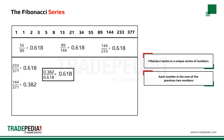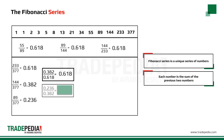If we left a second number in the middle empty and divided 89 by 377, we get another ratio — 0.236. Again, if we divide 0.236 by 0.382, we get 0.618.